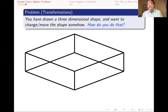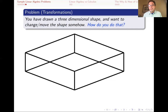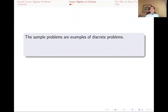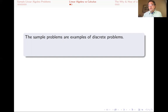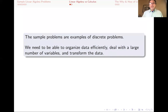I could come up with a lot of other questions — like how would you put data from sound or music, code it, and change it to make it lower or higher. But these three problems give you a bit of understanding of the kinds of problems we're talking about. These problems are examples of discrete problems — not about continuous functions — but about data that is discrete. In the last problem, the data is the coordinates of various points; in the others, there were input-output tables or transition probabilities from one state to another. We need to be able to organize the data efficiently, deal with a large number of variables, and be able to transform data conveniently.